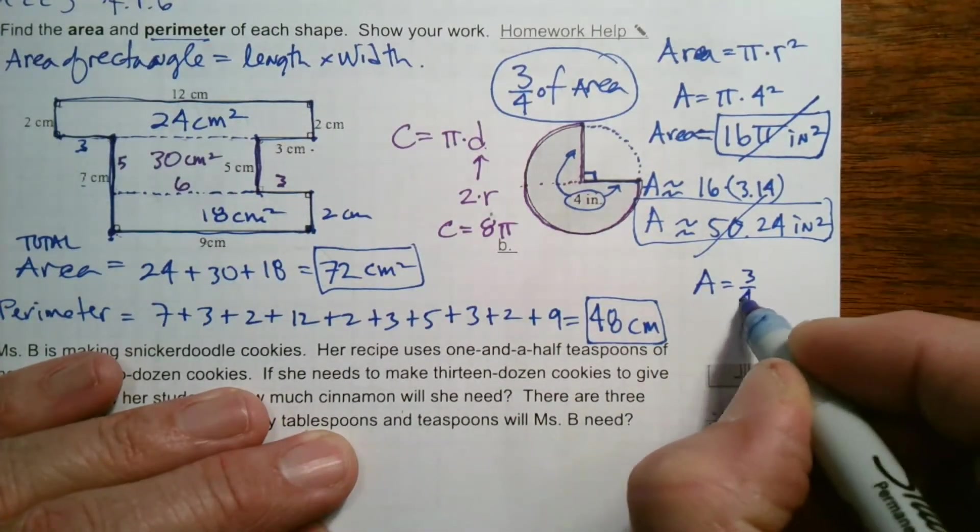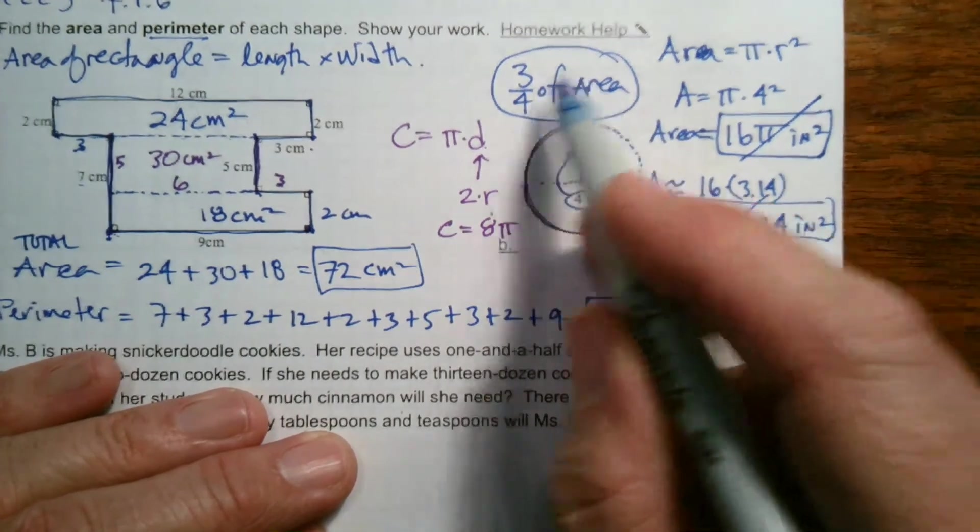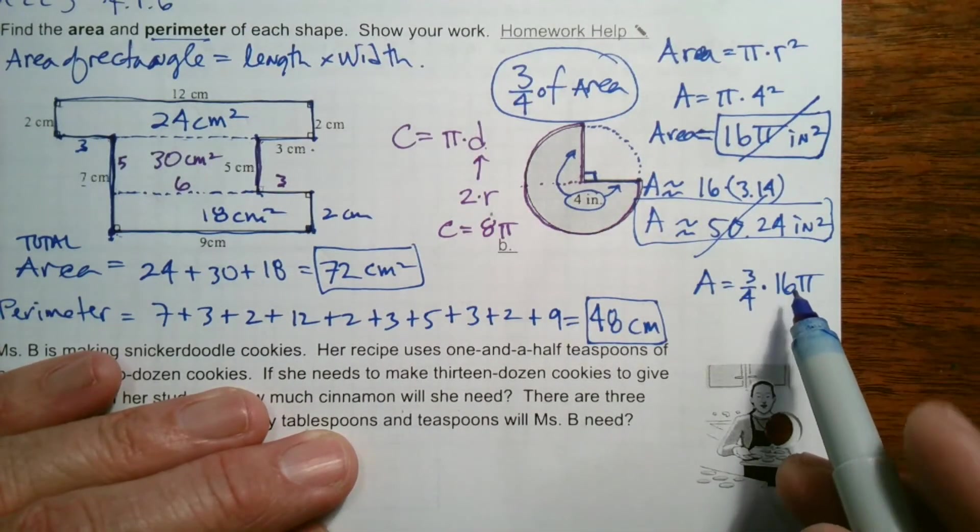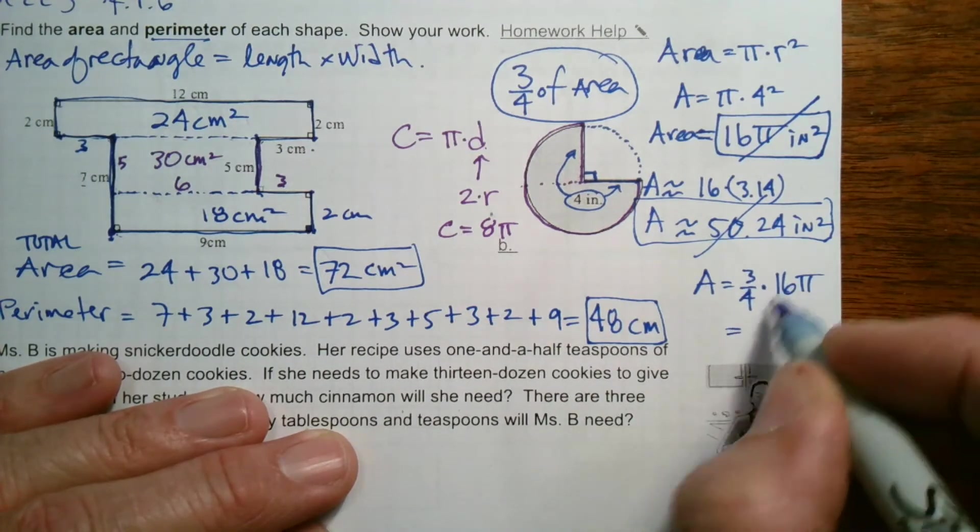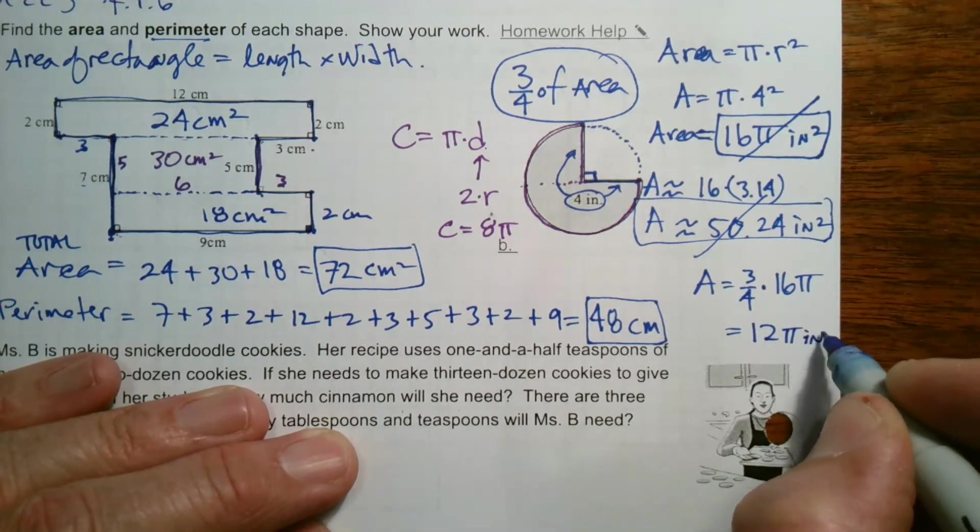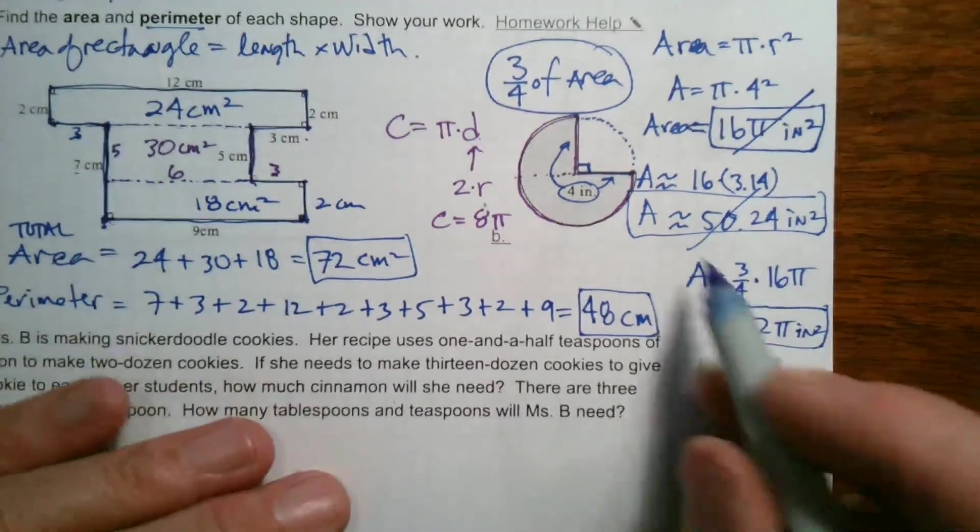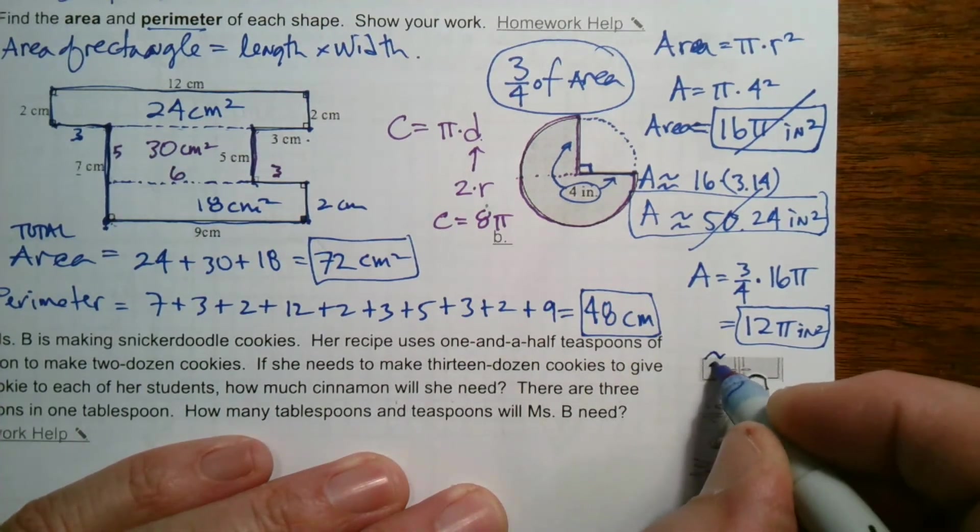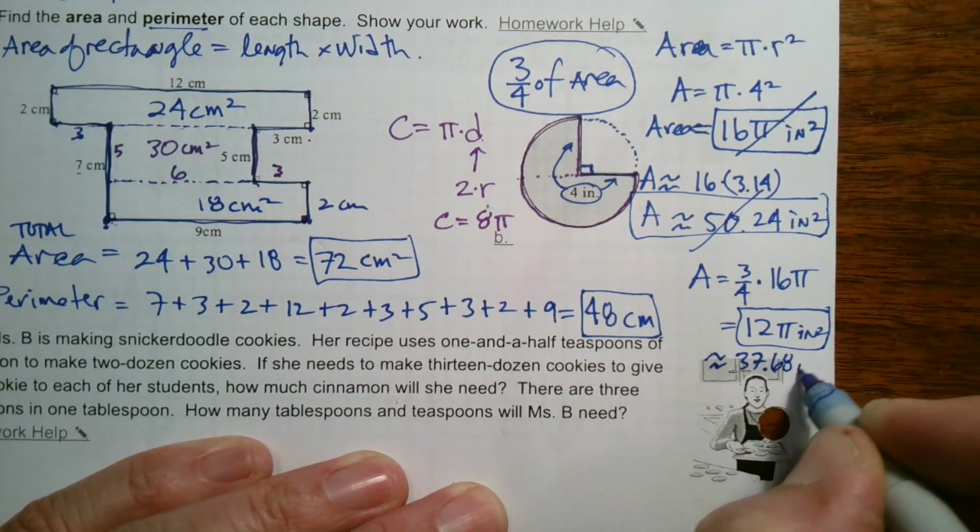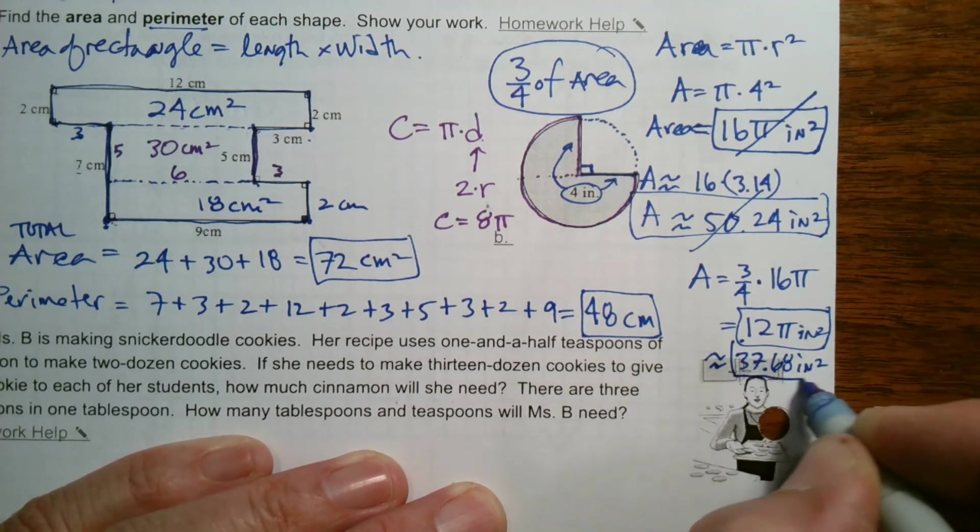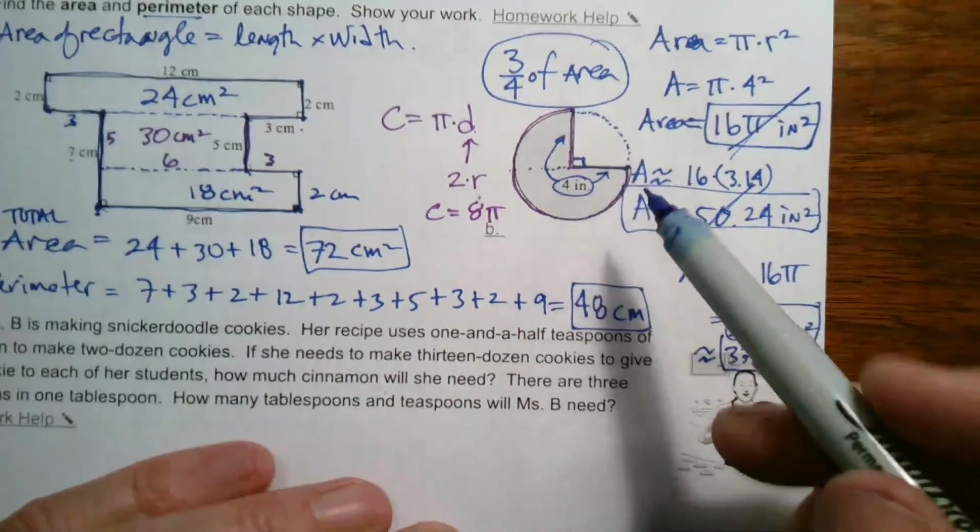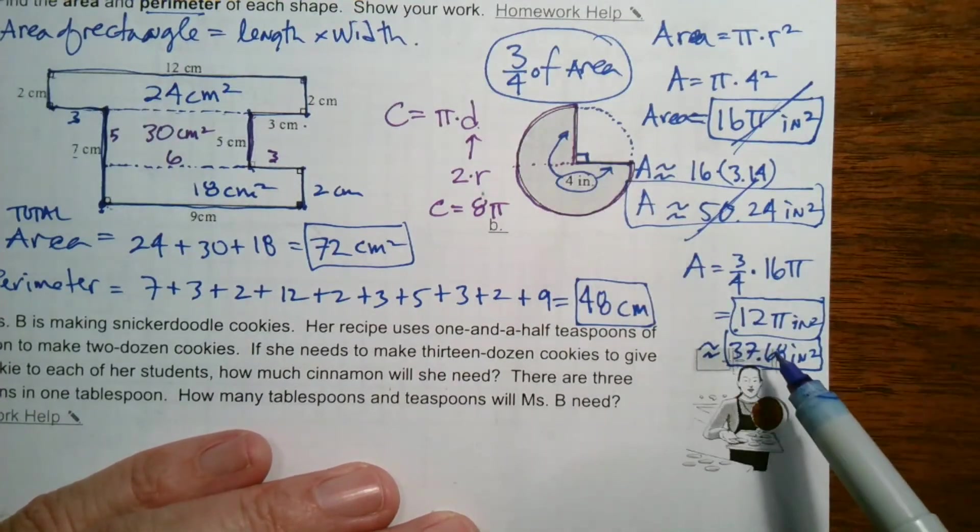Area would be three fourths times 16 pi, right? I've got to actually say three fourths of the area, not the whole thing. I gave you the entire circle. Sorry about that, but let's continue on. So three fourths times 16, you multiply three fourths times 16 and you're going to get 12 pi. So 12 pi inches squared is one answer. And then the other one would be to multiply 12 times 3.14, and it'd be approximately 37.68 inches squared. So either answer, whether you say 12 pi inches squared or 37.68. So these were the whole circle, but got ahead of myself and forgot that I wasn't doing the whole circle. It was only three fourths of it. Hopefully you caught that.